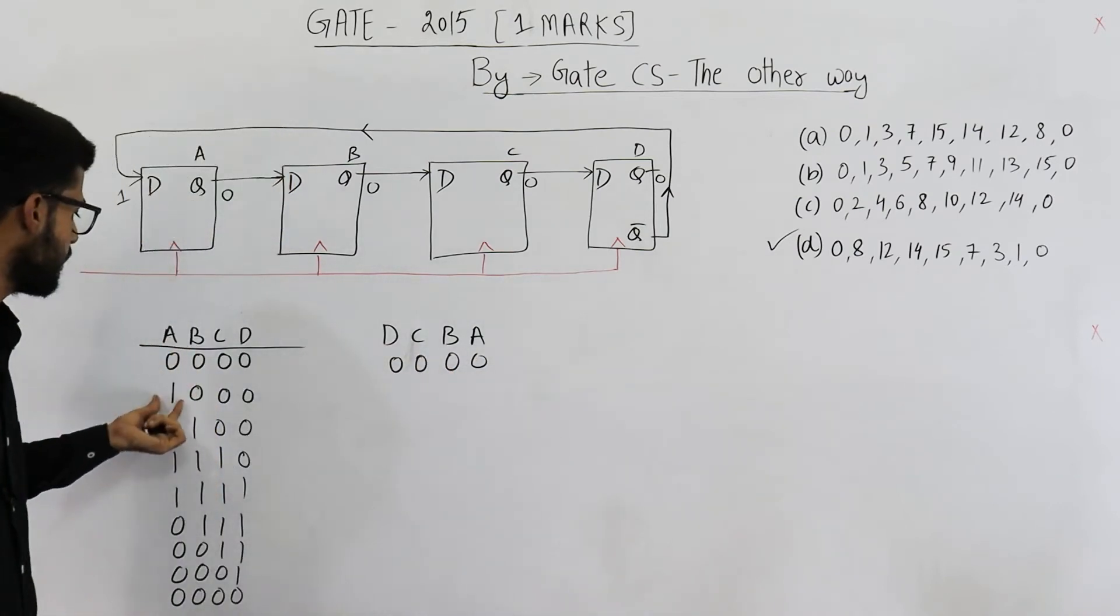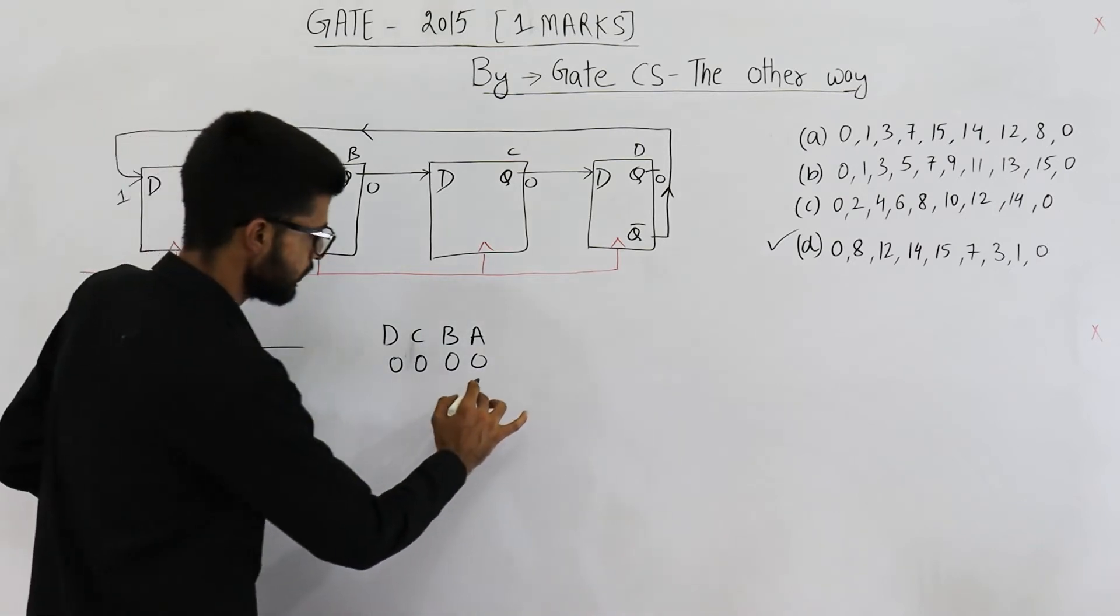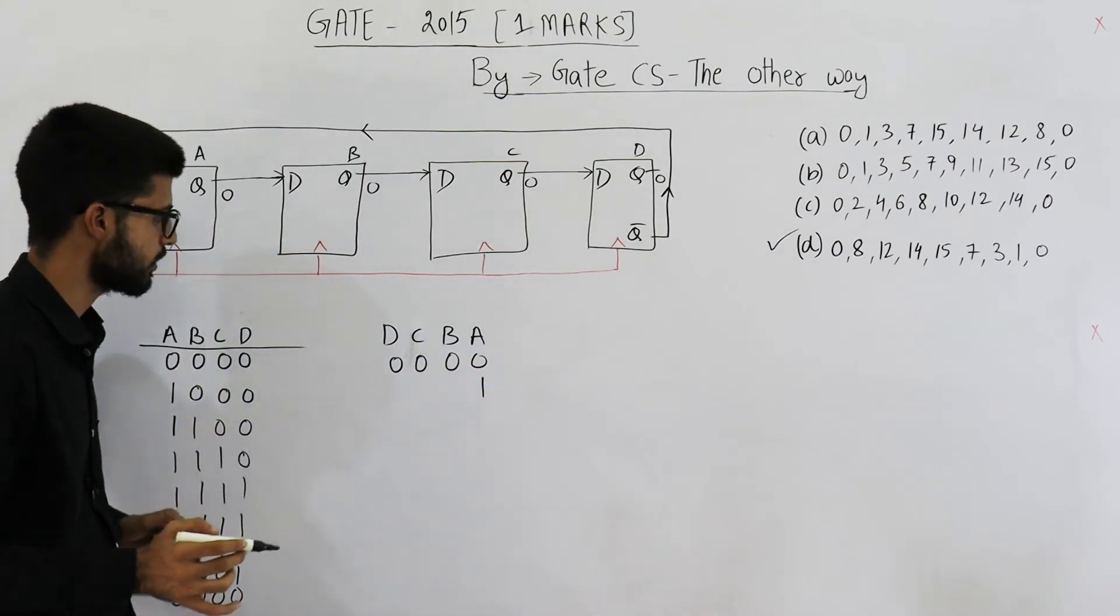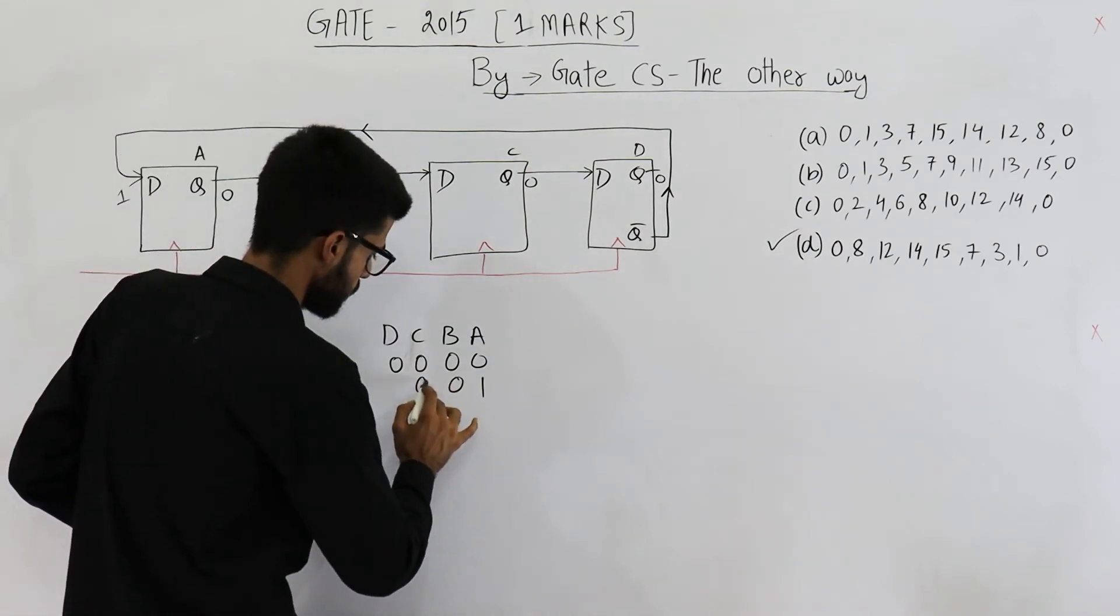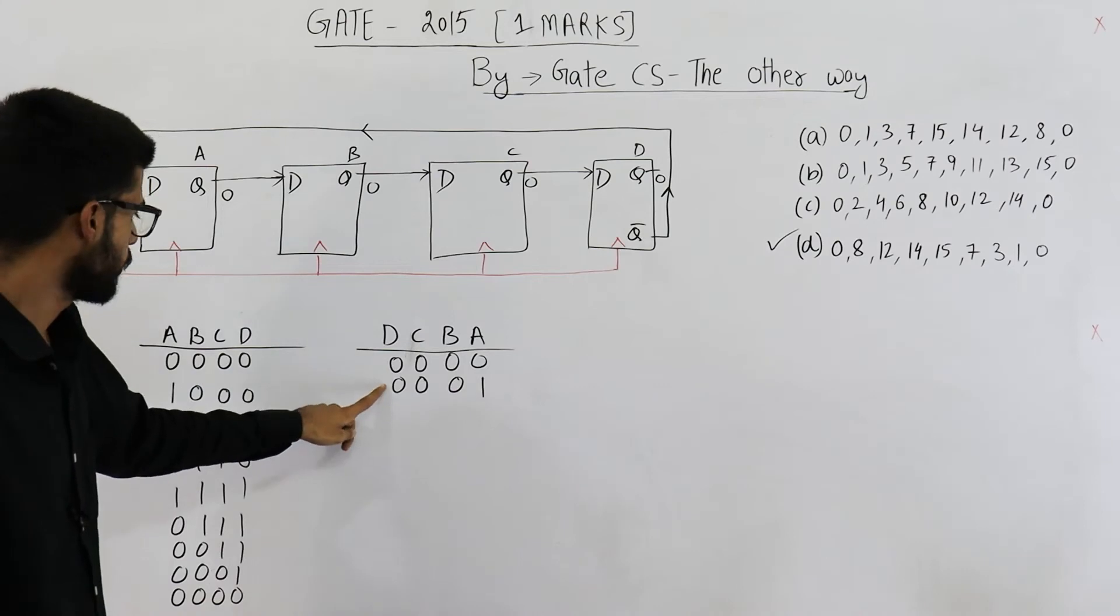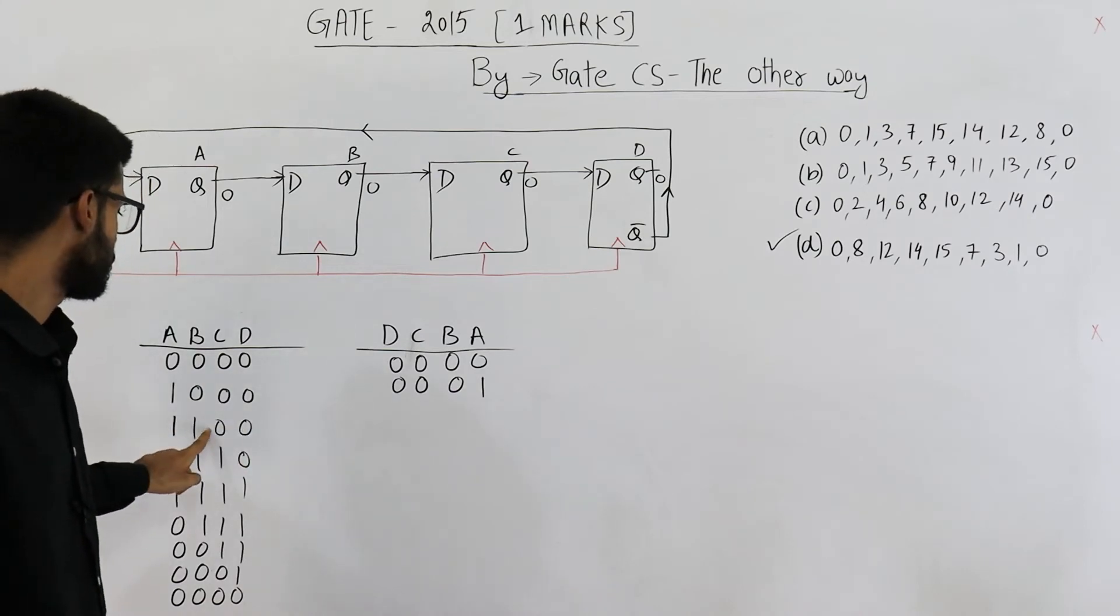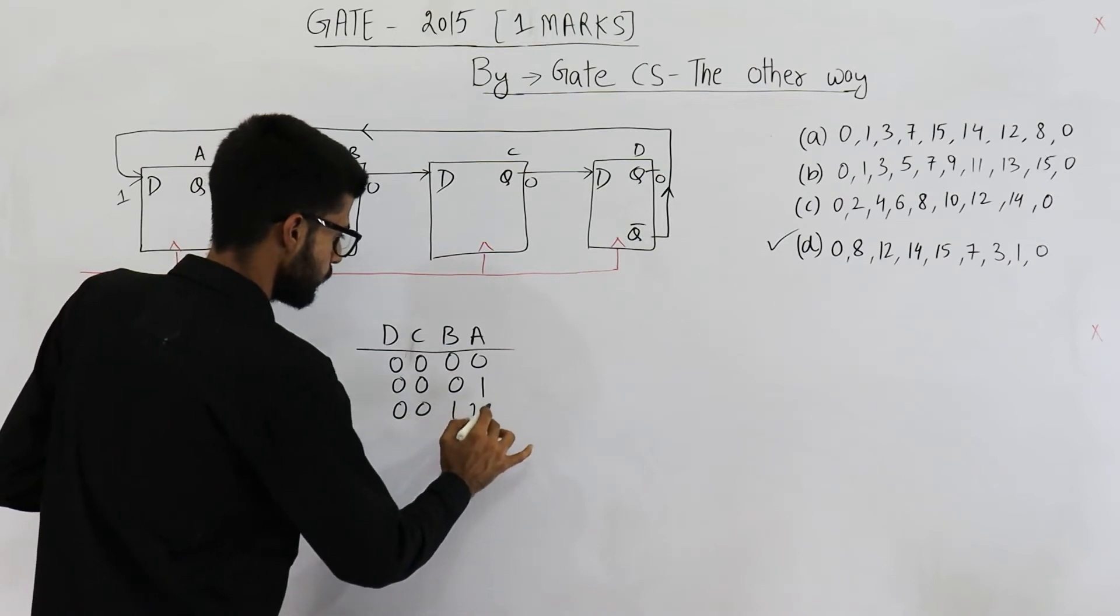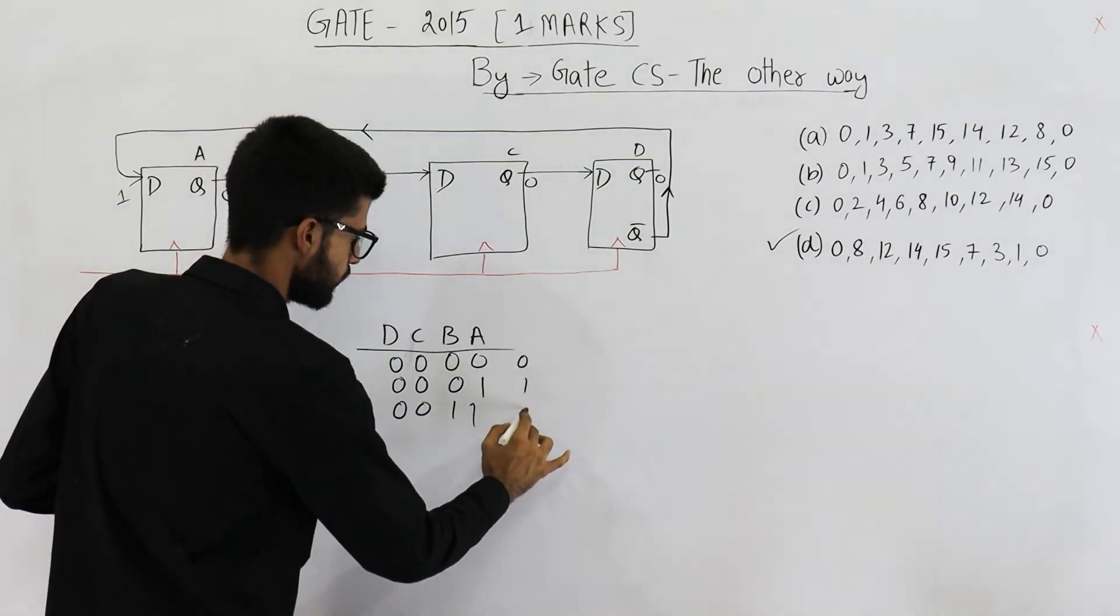Here, value of A is 0 and all 3 are 1. That means A is 0. Sorry, A is 1 and all 3 are 0. A is 1 and all 3 are 0. So, 0, 1. This will become 3. Double 0, double 1. So, 0, 1, 3.